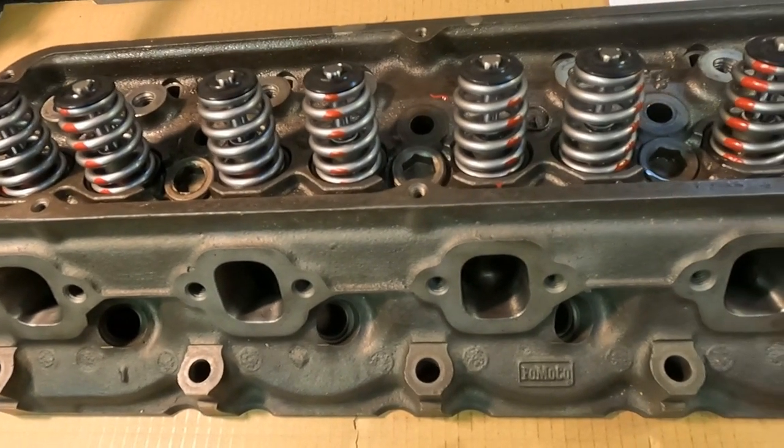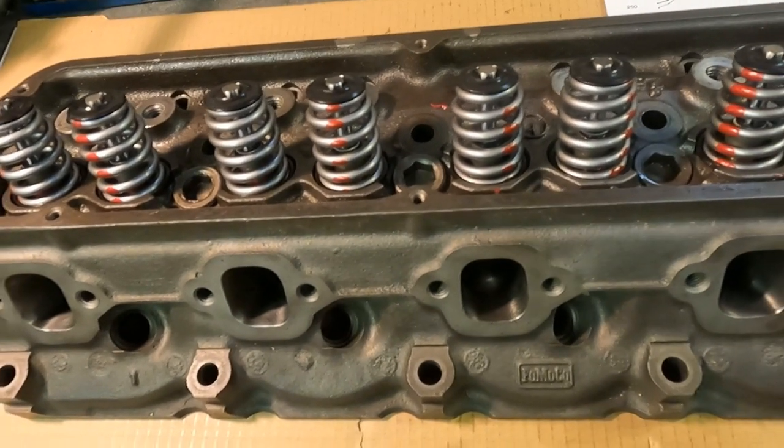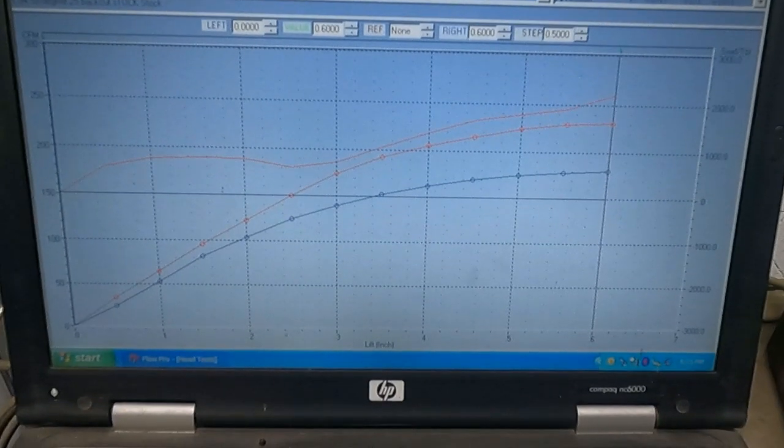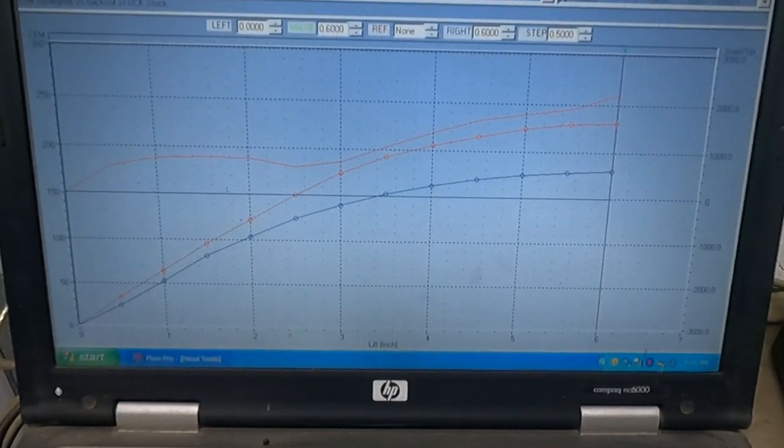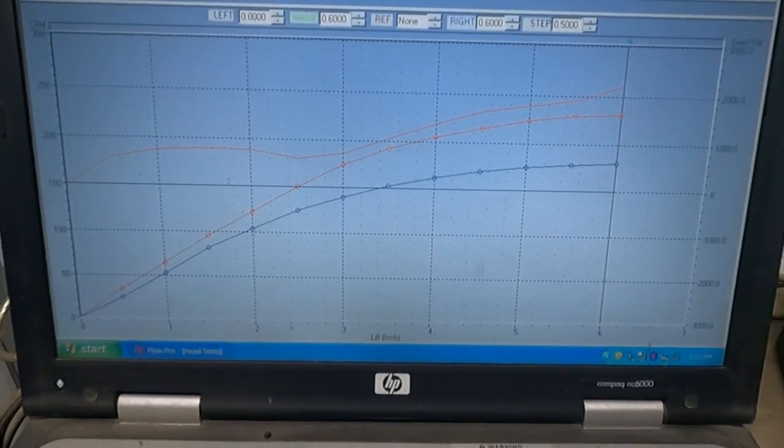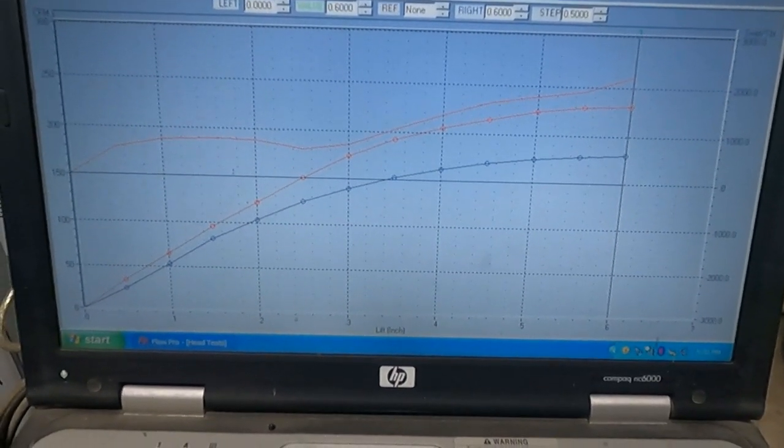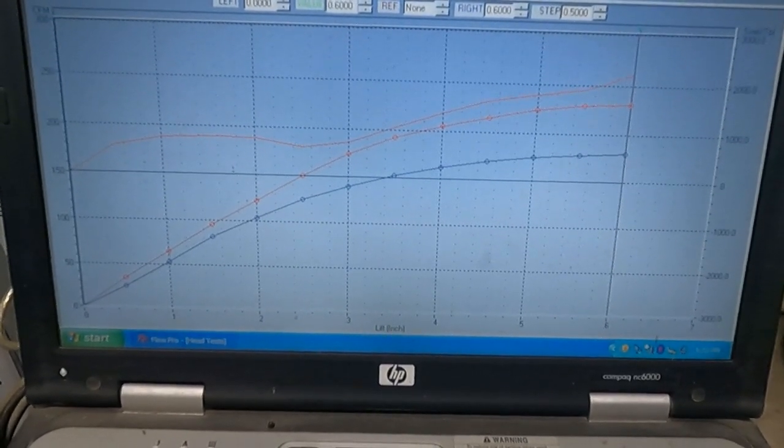Now these are the flow numbers from the heads. I know people have been asking, what do they flow? The highest line in red is actually a swirl trace. The RPM lines below that are the flow. I think we generated a little over 230 on the intake, about 180 on the exhaust.